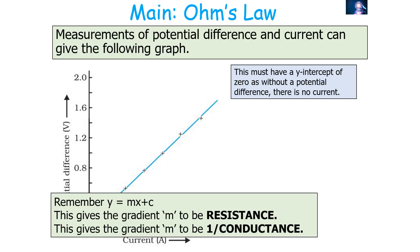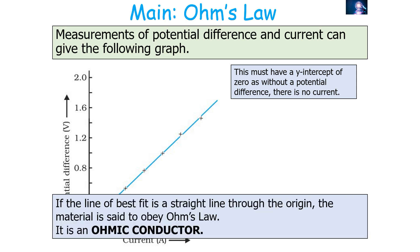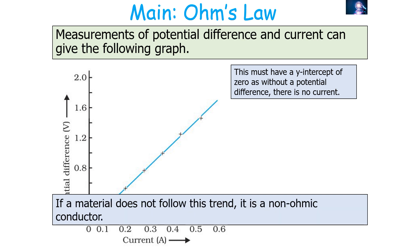The measurements of potential difference and current produce a graph with potential difference on the y-axis and current on the x-axis. The y-intercept is zero, since without a potential difference there is no current. The gradient of the line equals resistance, or one over conductance. If the line of best fit is a straight line through the origin, the material obeys Ohm's law and is called an ohmic conductor. If it does not follow this trend, it is a non-ohmic conductor.